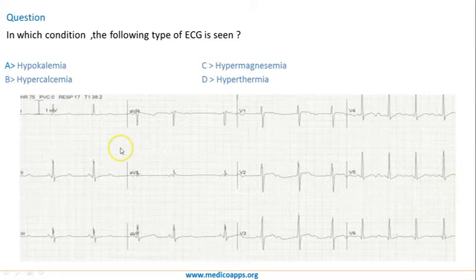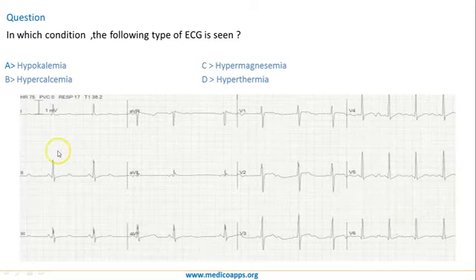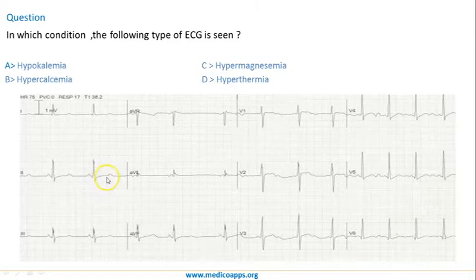Even though there is a slowing of heart rate, if you see the QT interval — normally 9 to 11 small squares — in this case measuring from the start of the Q wave to the end of the T wave, we can count 1, 2, almost 3 large squares, around 14 small squares. Definitely the QT interval is prolonged.